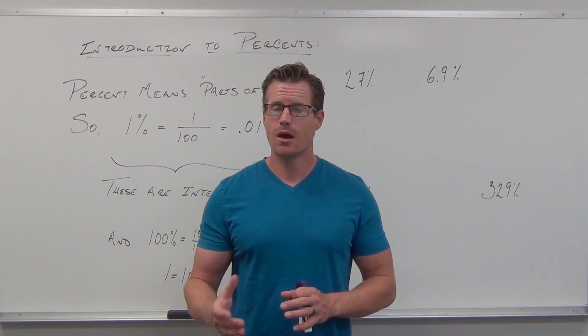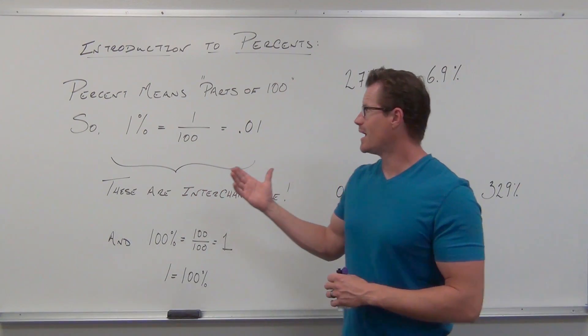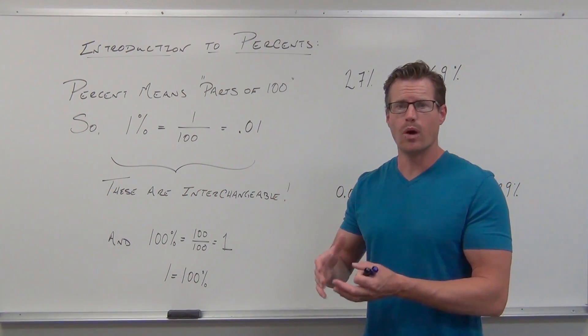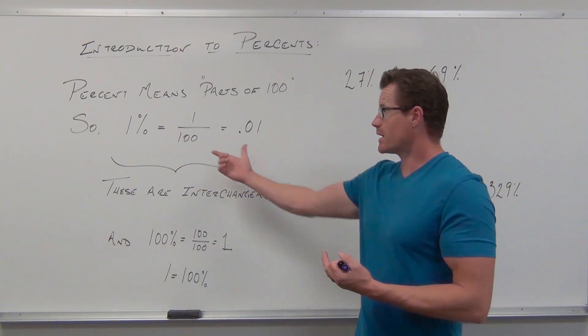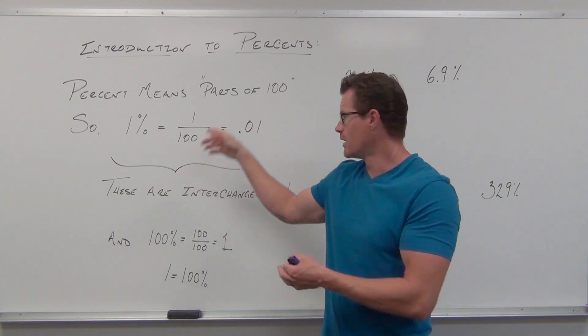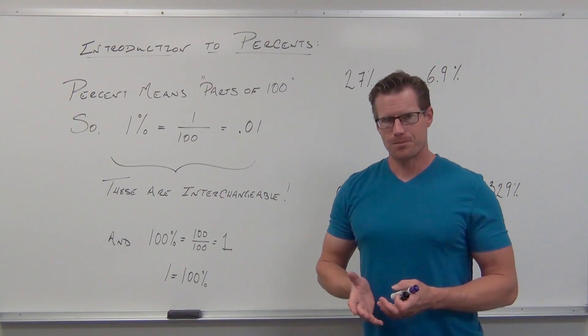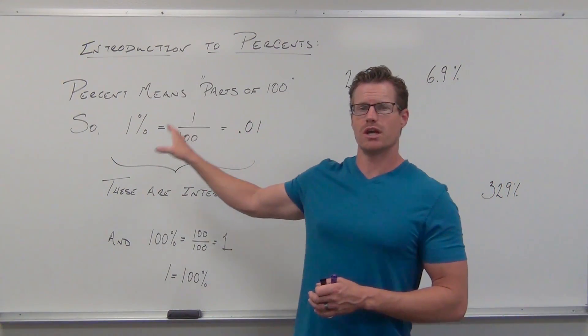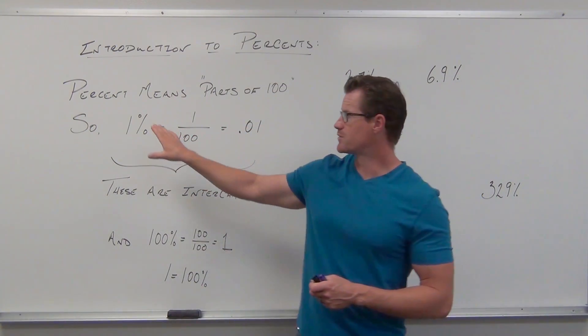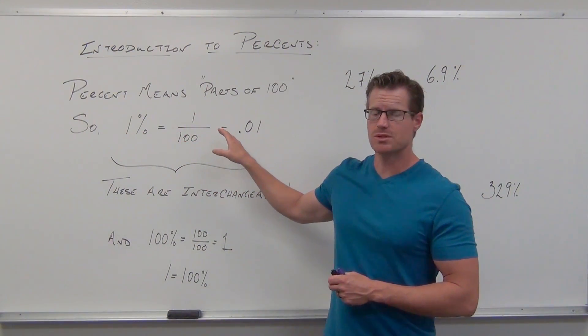So when we hear the word percent, what percent literally means is parts of 100. So when we have 1 percent that really does mean one part out of 100, or 1/100. Now we can write a fraction or we can write a decimal but that means one part out of 100. 1 over 100 or 0.01. What I really want you to know in percents is that these are all interchangeable. In fact going from here to here is how we change from percents to fractions or percents to decimals.